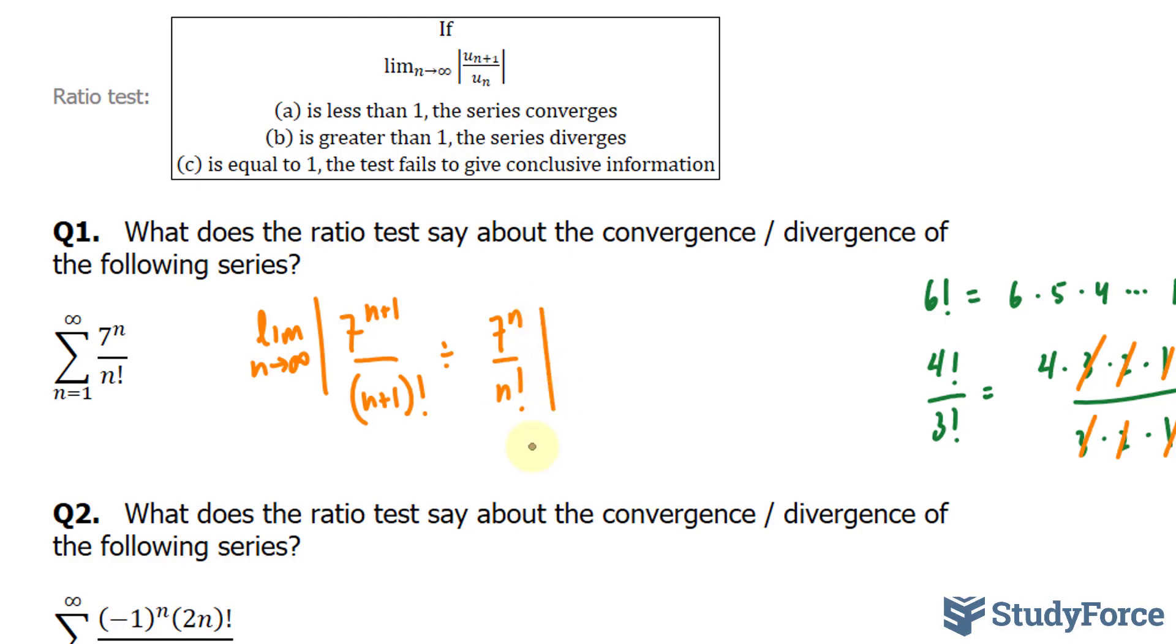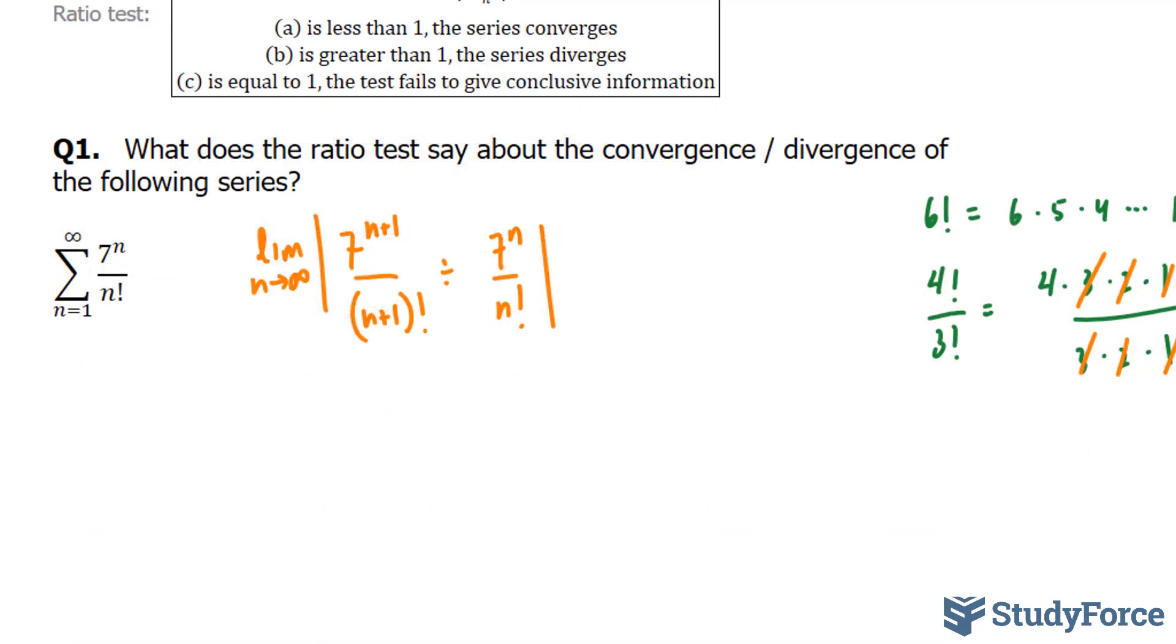Let's go ahead and algebraically manipulate the following. Remember that when you divide two fractions, you flip the second fraction and multiply instead. So we have the limit in absolutes of 7^(n+1) over (n+1) factorial, that doesn't change, times n factorial at the top and 7^n at the bottom.